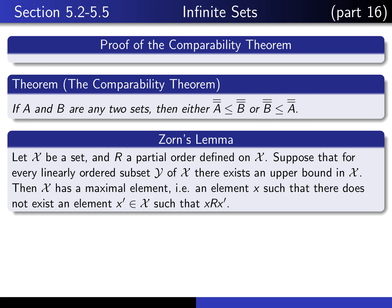The proof of the comparability theorem makes use of a fundamental assumption of mathematics which can be deduced from the axiom of choice, known as Zorn's Lemma, which I introduced in the previous lecture video. It says that if script X is any set, R is a partial order defined on that set, and every linearly ordered subset Y has an upper bound, then X has a maximal element.